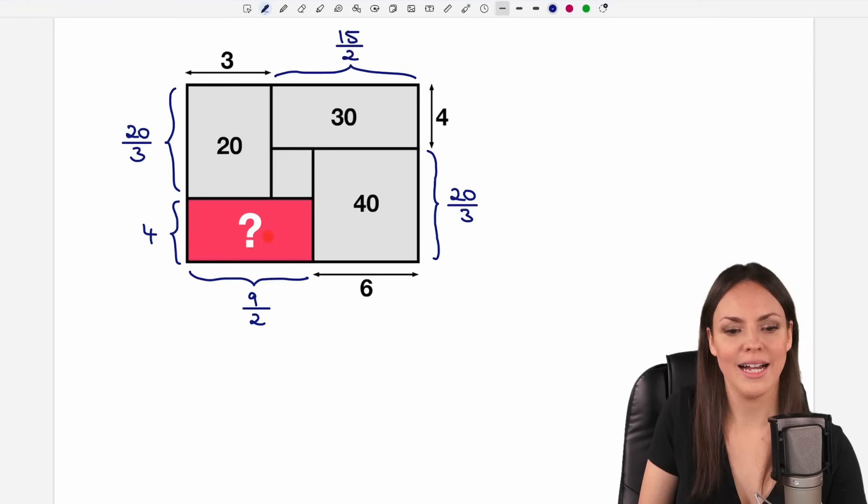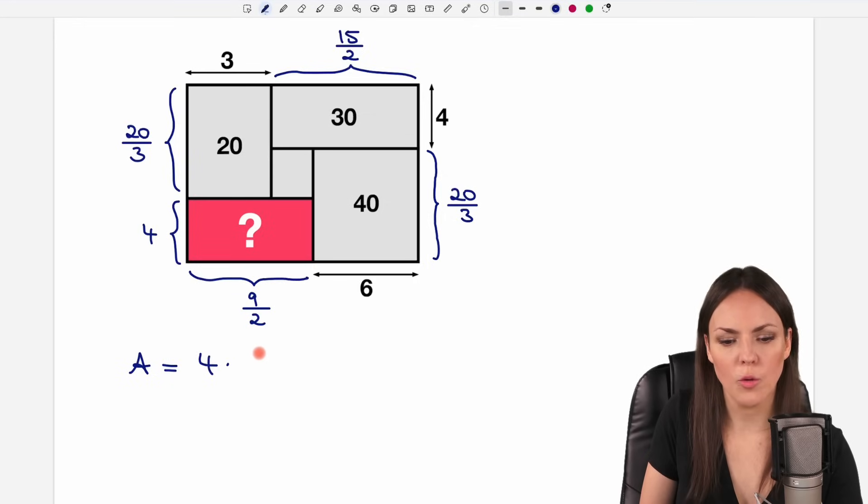And now I can go back to the beginning. I wanted to find the area of this rectangle. And I can find it by multiplying 4 by 9 over 2 now. And I get an area of... Maybe I calculate 4 over 2 first, which gives me 2. And then I have 2 times 9, which equals 18. And this is my area of my red rectangle.